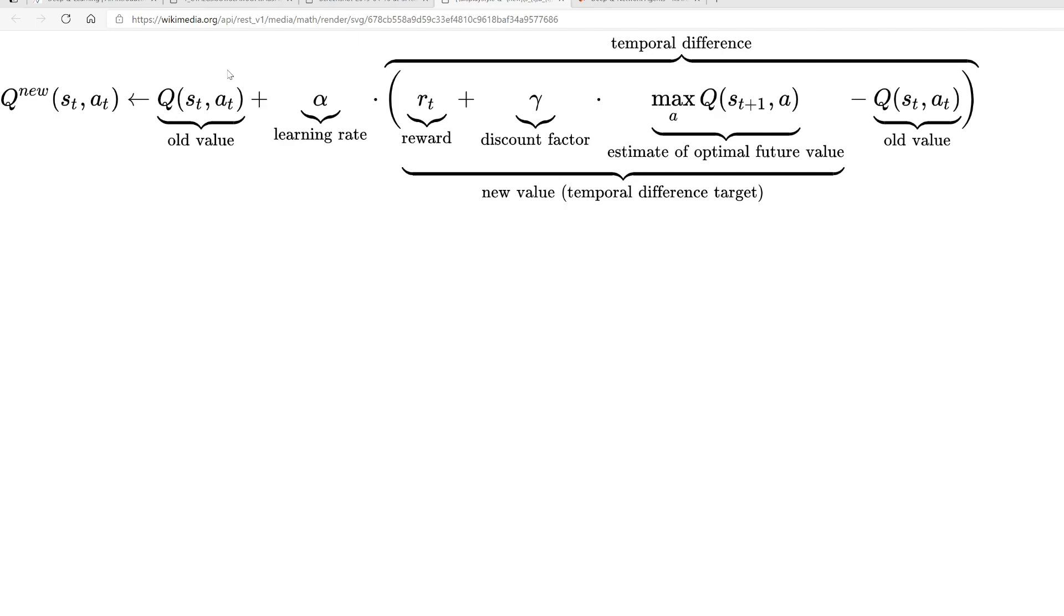If I take this value to the left-hand side, that would tell me what is the delta Q, or what is the change in Q, which would be alpha times these first two terms minus the old value. The first two terms over here are basically the new value, and this is the old value.